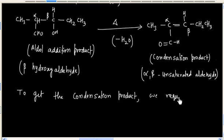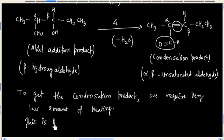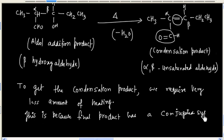We require very little heating for this condensation. This is because the final product has a conjugated system — we have a double bond, single bond, then a double bond. So the final product is a conjugated system, which is why condensation is favored. So this is about the aldol reaction.